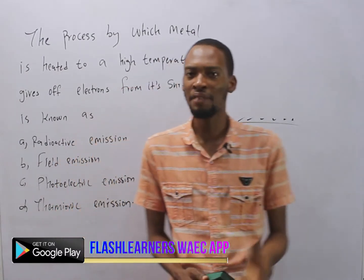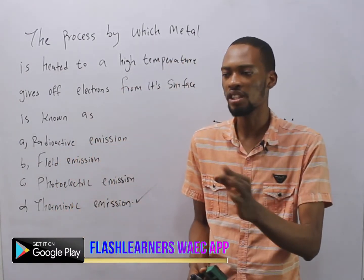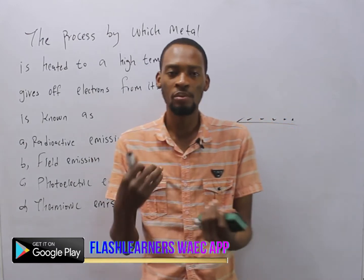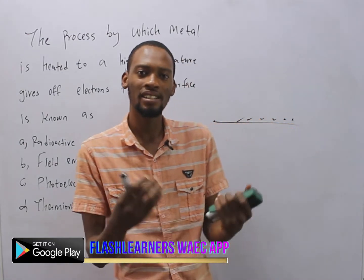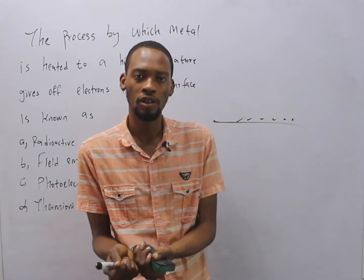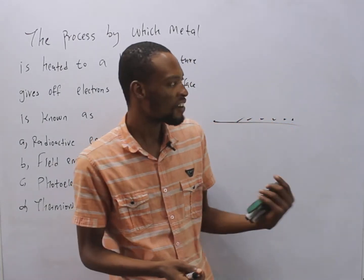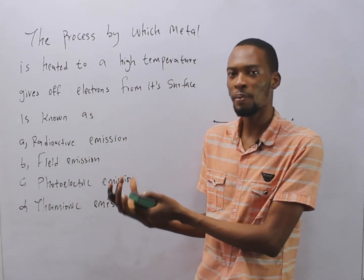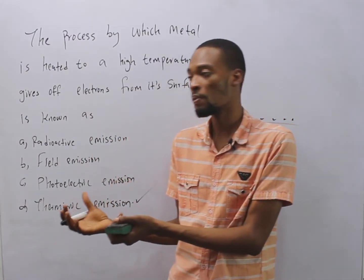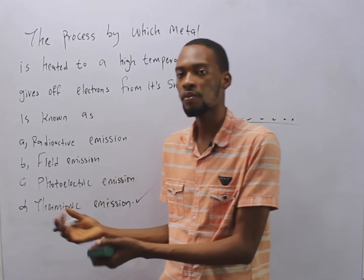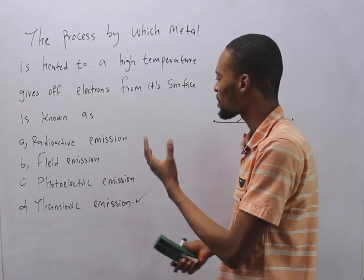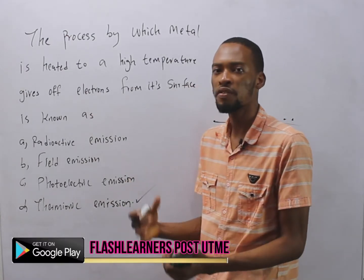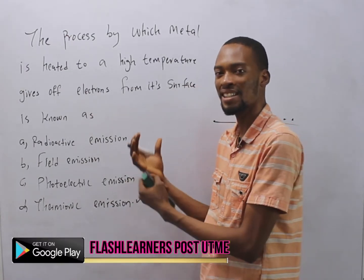Gamma rays have the highest penetrating power and can only be absorbed by a lead block. Meanwhile, alpha particles can be stopped by a thin sheet of paper, and beta particles can be stopped by an aluminum foil or metal sheet.